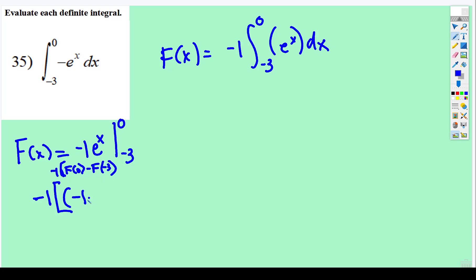So negative 1 times e^0 subtract e^(-3). Well, e^0 is 1, negative 1 times 1 is negative 1.